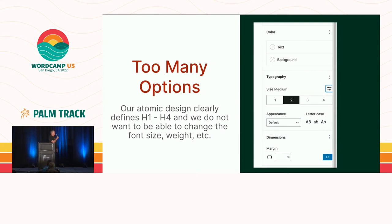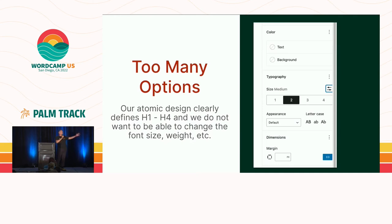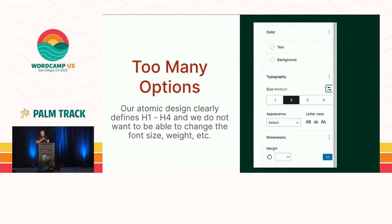Now we've gotten into one of the blocks we do want: the heading block. And you can see there are too many options. Based on that design we saw earlier, there are too many options here. We don't need all this — we don't want to change text or background colors, we don't want to change typography settings, we don't want to change the size. Those are established in the design system and we want to keep that.